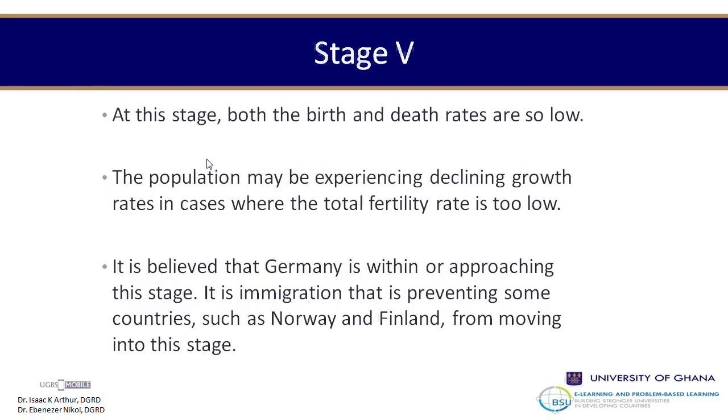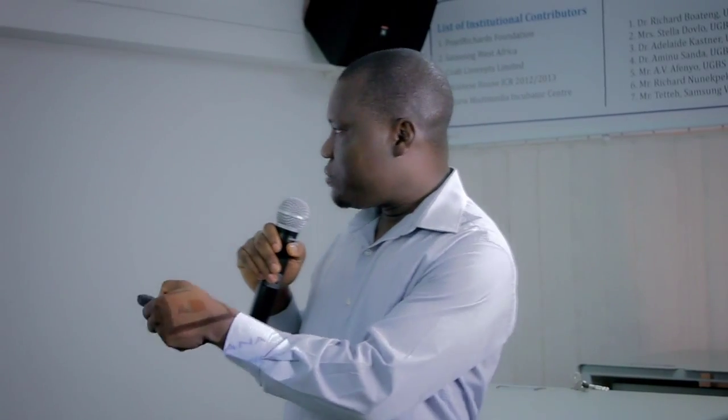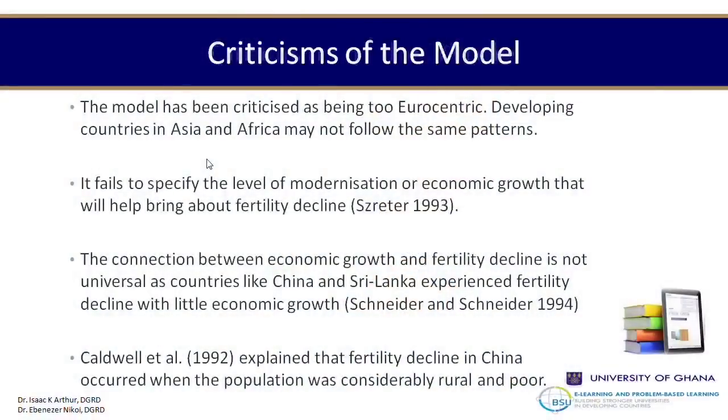Does this model apply to everybody? To a large extent it can determine the path of different countries in terms of population changes, but it doesn't completely fit every country. One major criticism is that the people who developed the model — Notestein and Warren Thompson — were living in developed countries, so their observations came from that part of the world. This makes the model Eurocentric and means it doesn't reflect a lot of what is going on in most Asian and African countries.